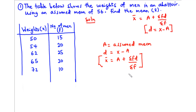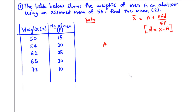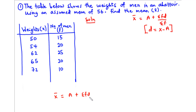For question one, the table below shows the weight of men in an abattoir. Using an assumed mean of 56, find the actual mean. From the table we have the weight of men and the frequency — the number of times a particular weight repeated itself. The formula is x̄ = assumed mean + Σfd / Σf. From the question, the assumed mean is 56.